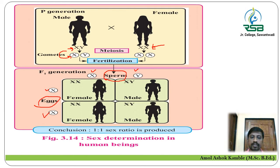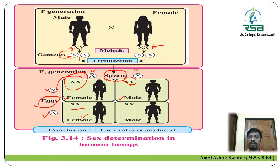When the X from the egg combines with the X from the sperm, it gives rise to XX — a female. When the X from the egg combines with the Y from the sperm, it gives rise to XY — a male. The conclusion is that a 1:1 sex ratio is produced by crossing the gametes from male and female.